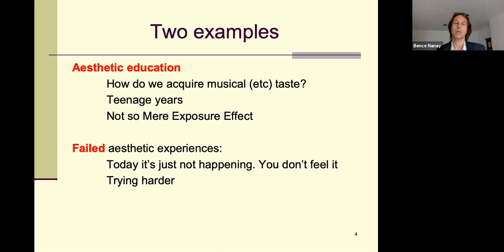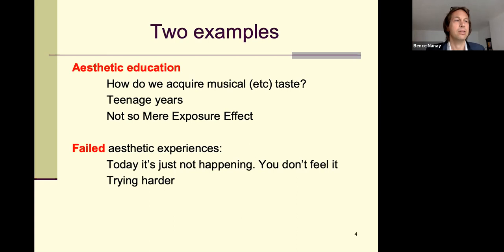I think that's a really important and neglected way in which our taste develops. The second example is about failed aesthetic experiences. Very often we go to the museum, sit in front of our favorite painting — a painting in front of which we've had very strong aesthetic experiences before — but today nothing's happening. You're just looking at it.